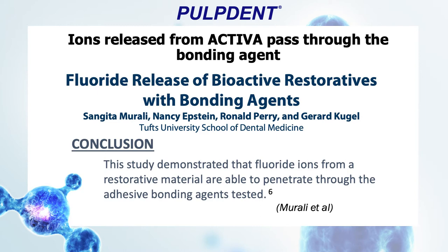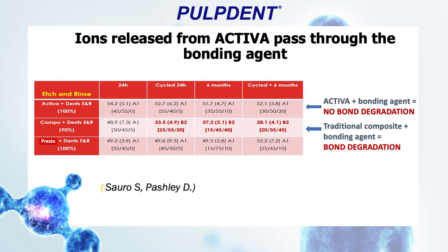Degradation of the bonding layer can cause micro leakage and breakdown of the tooth surface. Studies indicate lower concentrations of MMPs with Activa. A study done at Tufts University demonstrated that fluoride ions from the restorative material were able to penetrate through the adhesive bonding agents tested. A study from Soro and Pashley showed that ions released not only pass through the bonding agent, but also help prevent the degradation of the dentin bond by inhibiting the release of MMPs.